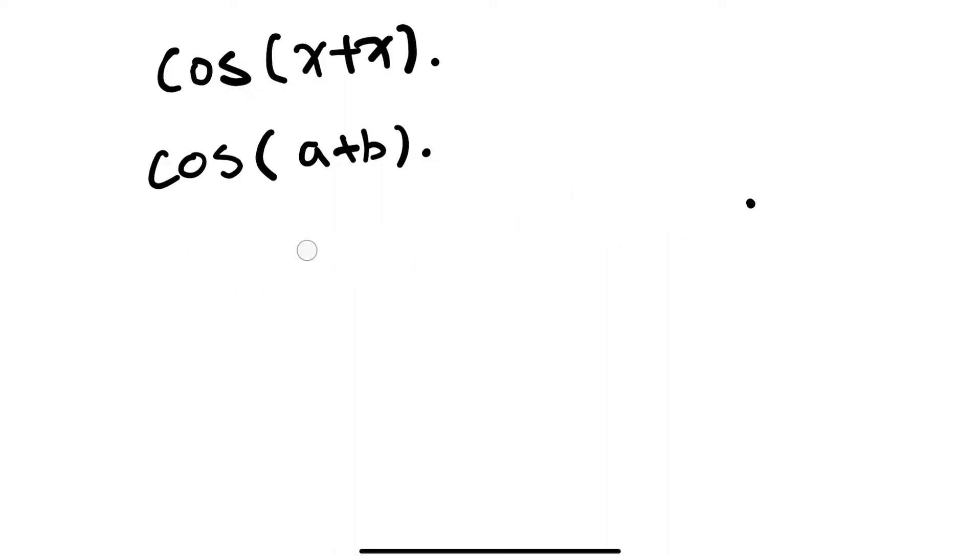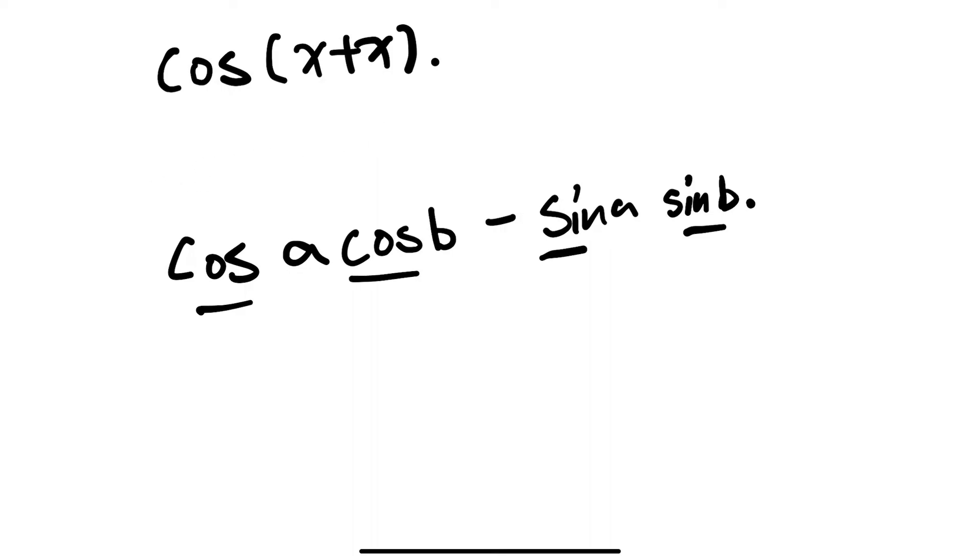So it applies here, it's basically the same thing. Then with x and x, that's cosine squared x minus sine squared x.